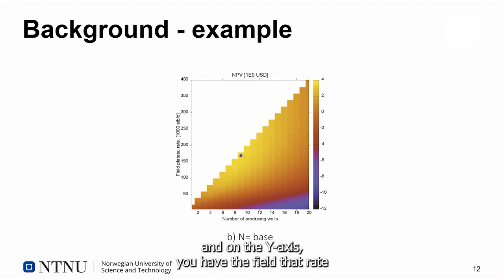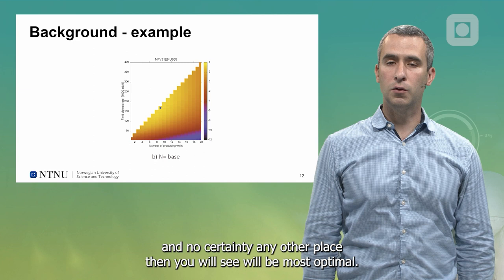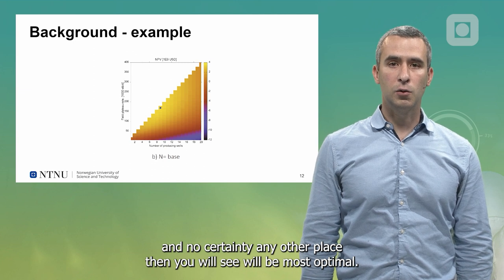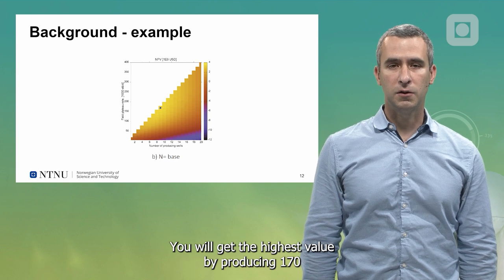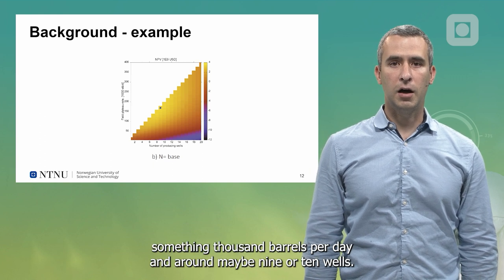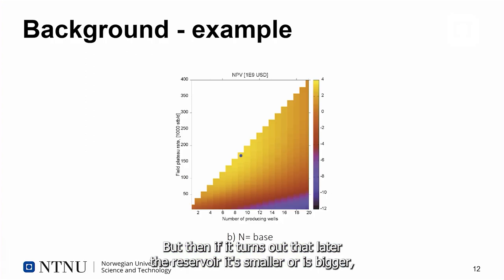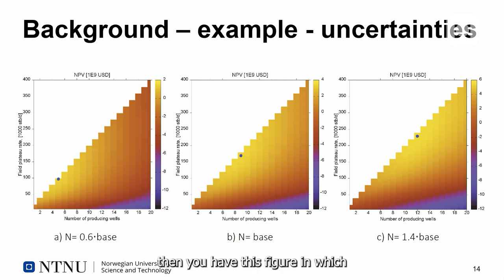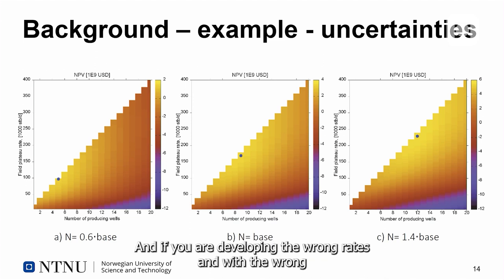On the y-axis you have the field plateau rate, and on the x-axis you have the number of producing wells. If you assume no uncertainty, it will be most optimal to produce around 170-something thousand barrels per day with around nine or ten wells. But if it turns out that later the reservoir is smaller or bigger, the values of number of wells and rates change significantly, and you will get a very different economic revenue.